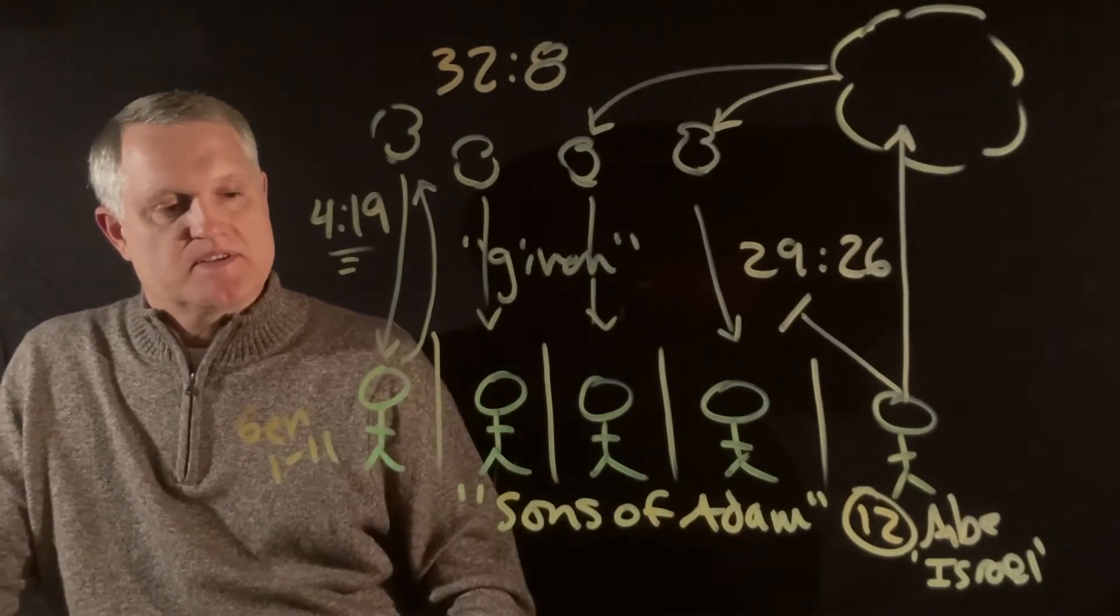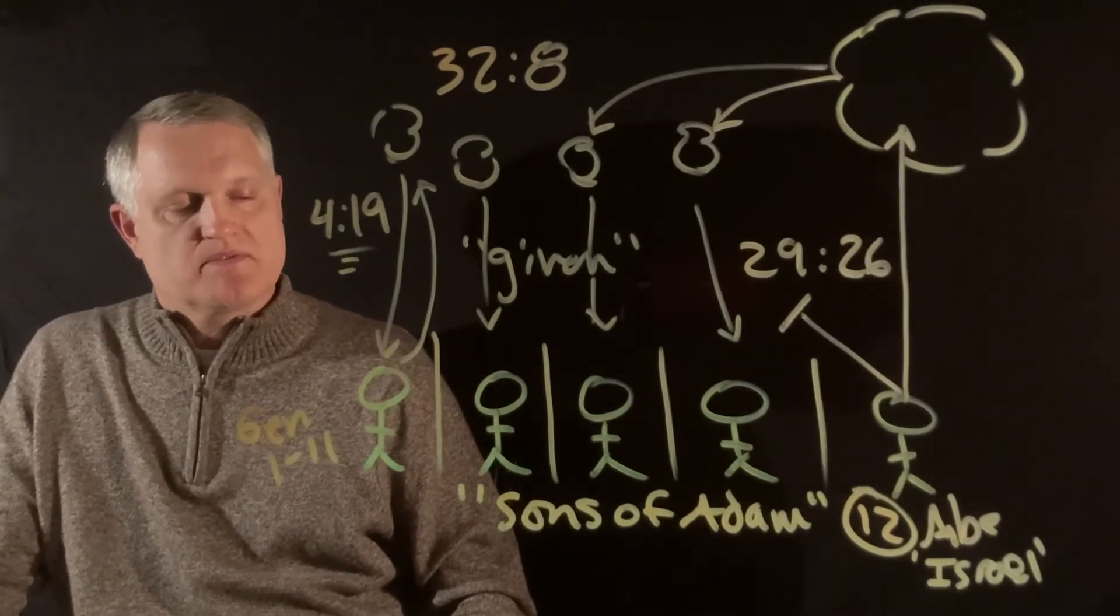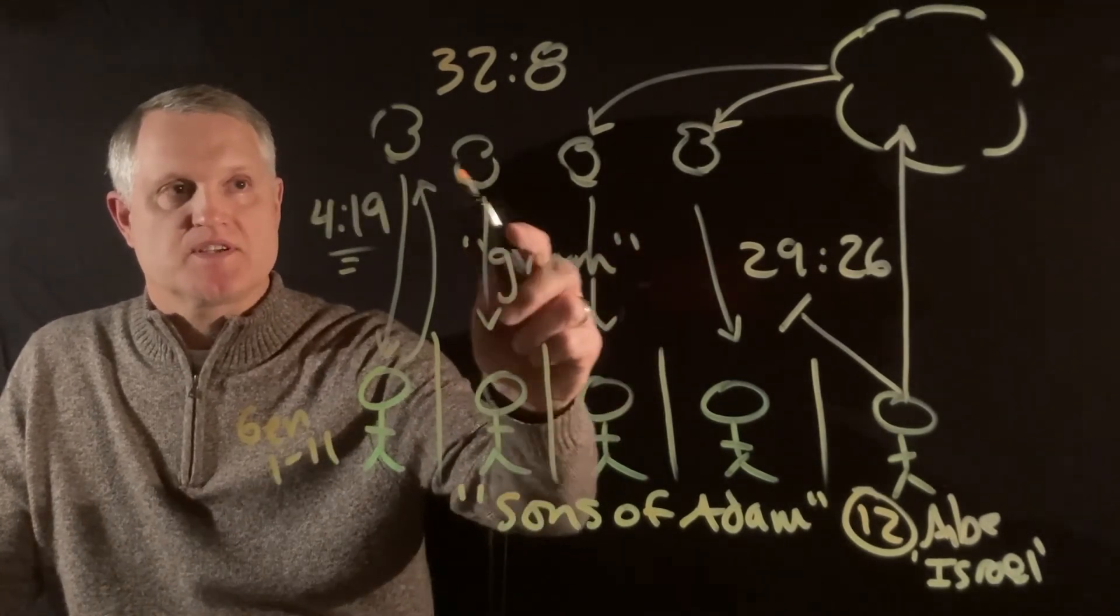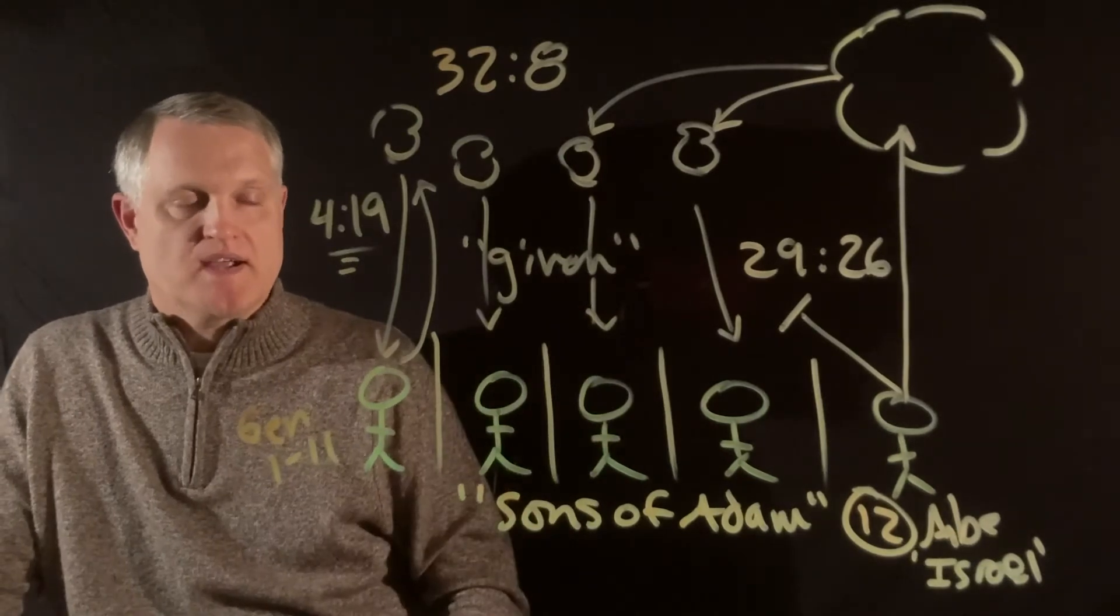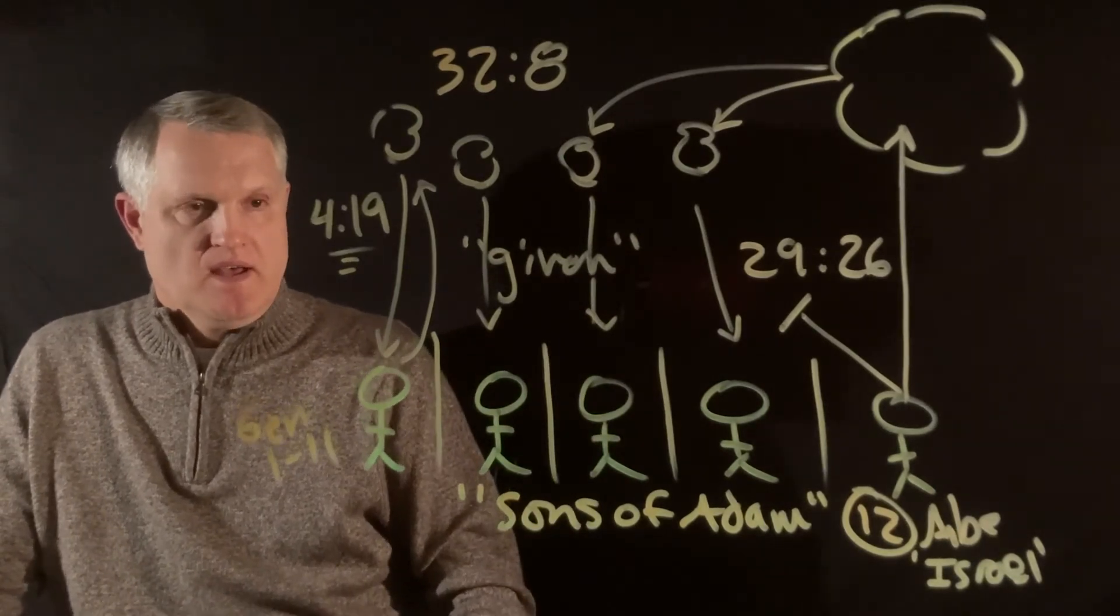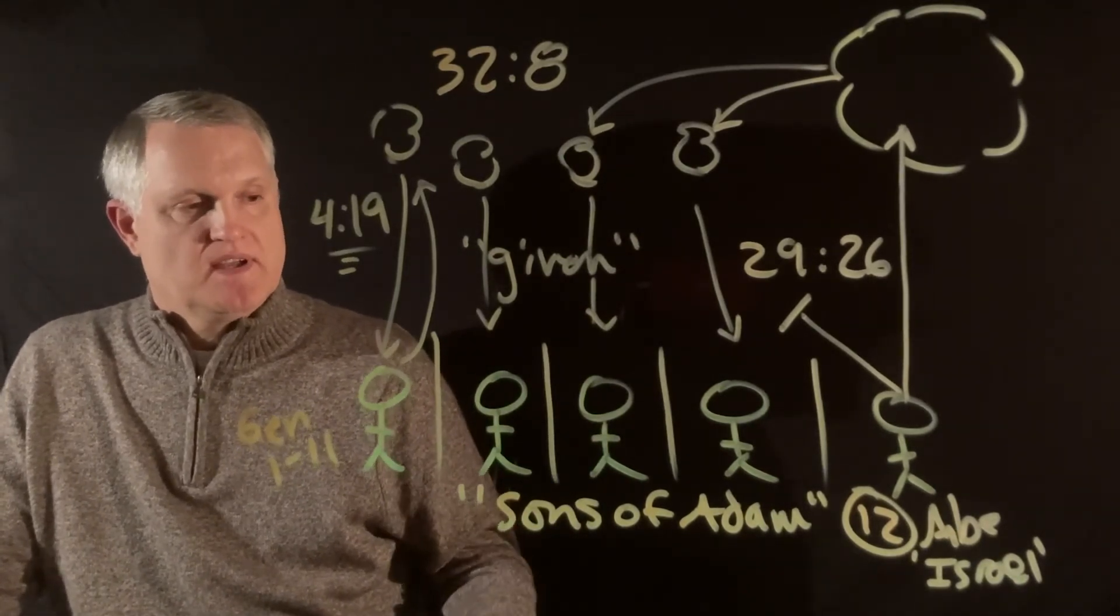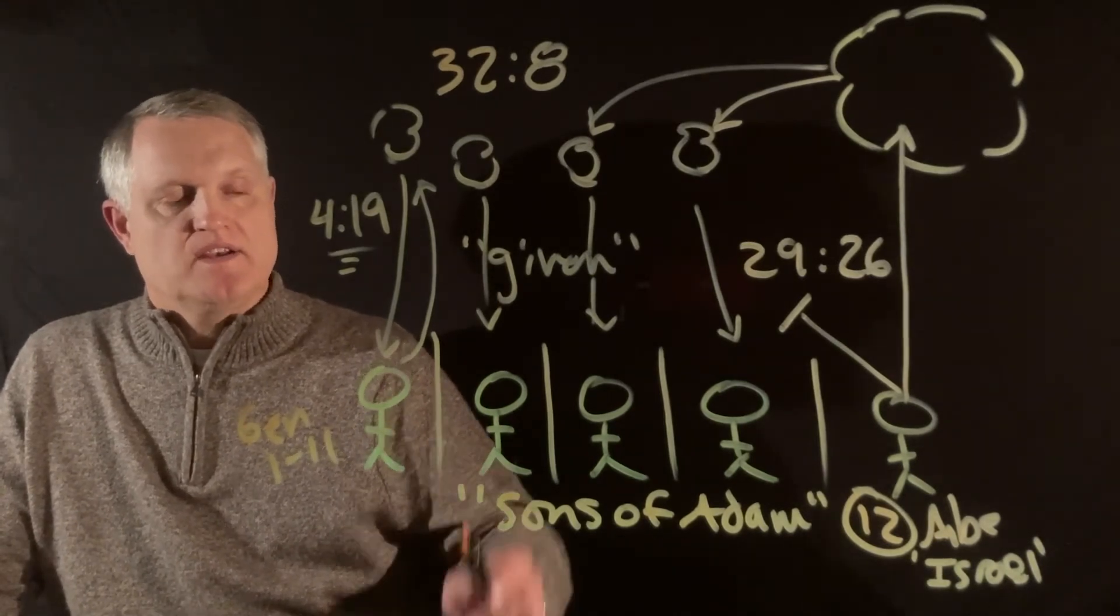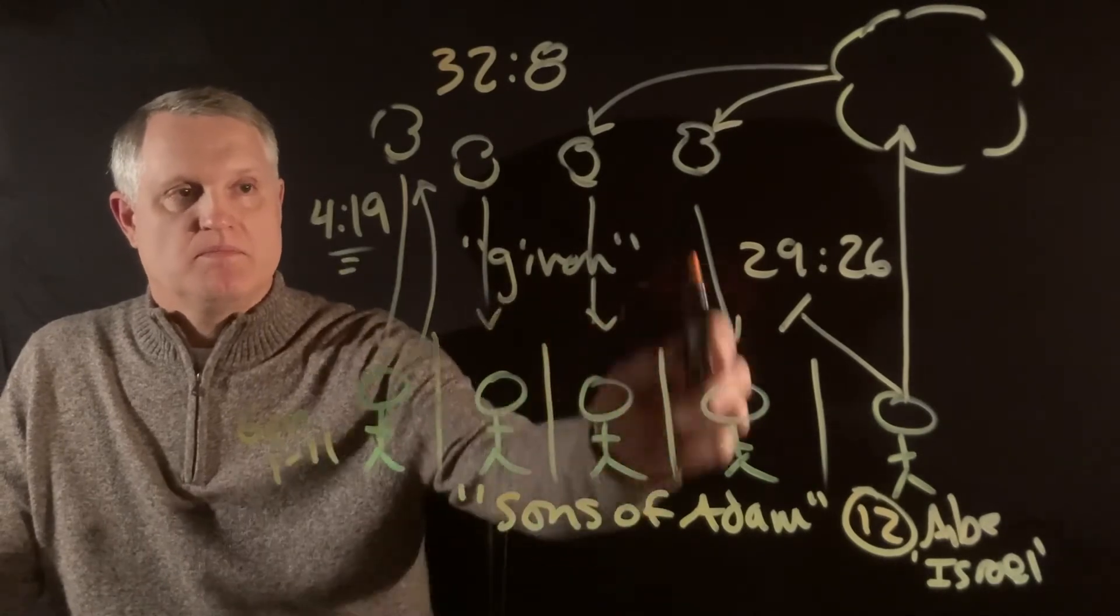he set the boundaries of the peoples according to the number of the bene Elohim, the sons of God, the divine class beings. Today's English version translation says it nicely, he assigned to each nation a heavenly being.